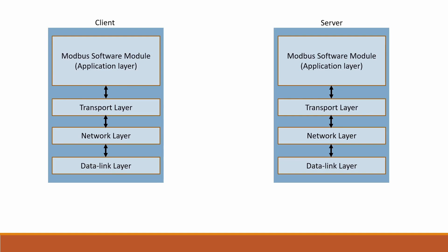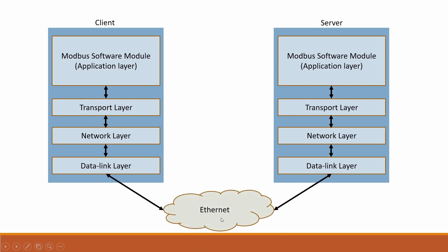Coming to the Modbus network layering, there are five layers: the Modbus application layer, the transport layer, the network layer, the data link layer, and finally the physical layer, which is Ethernet. There is no presentation layer or session layer here because Modbus does not support data encryption, decryption, authentication, or authorization services. Both the Modbus client and the Modbus server allow data flow in both directions.